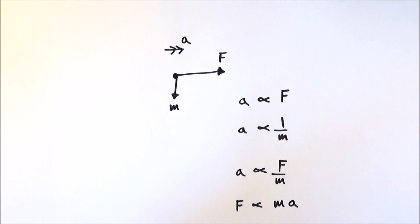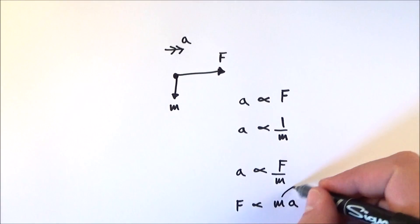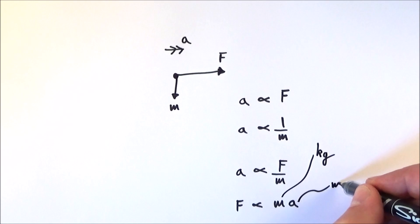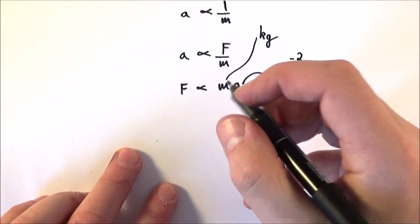Now that's all very good and if we choose our units carefully, perhaps we maybe measure our mass in kilograms and measure our acceleration in meters per second squared and we use an appropriate unit for force, then we can get rid of this proportional sign here. And that's exactly what we do.